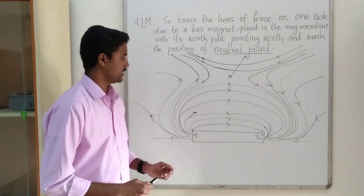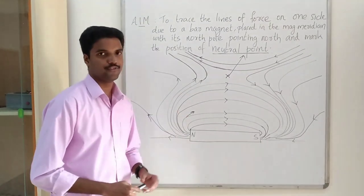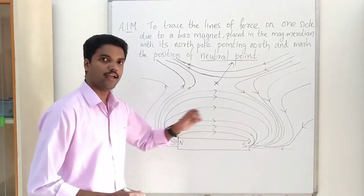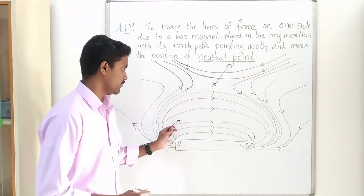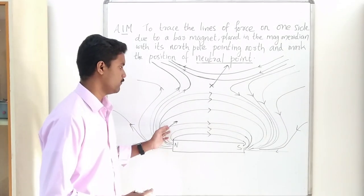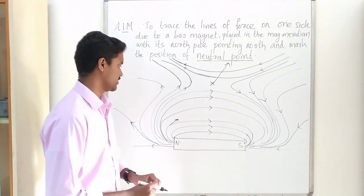As we all know that a bar magnet has its own magnetic field around it. The magnetic line of force is a curve around the magnetic field in which the tangent drawn at any point of the magnetic field will give the direction of the magnetic field.